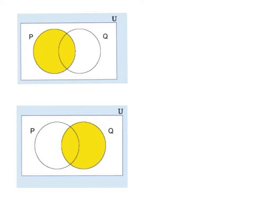We have universe, set B and set Q. Set B is yellow, meaning this part is shaded, so the answer is B — set B is shaded. Then the next one is very similar: set Q is shaded, so the answer for the second one is Q.